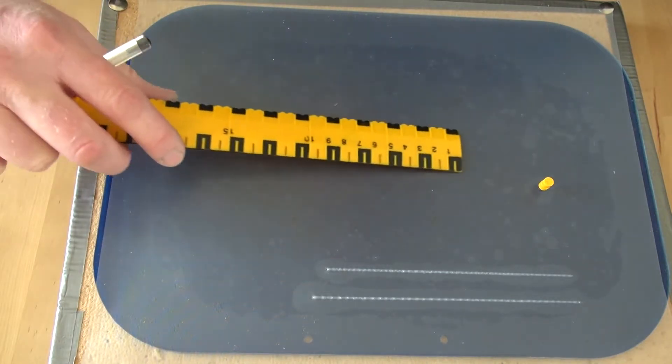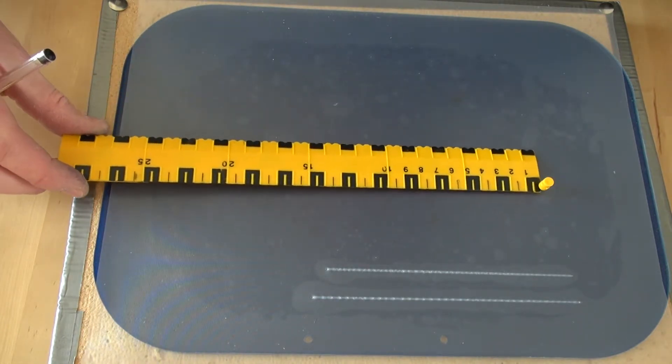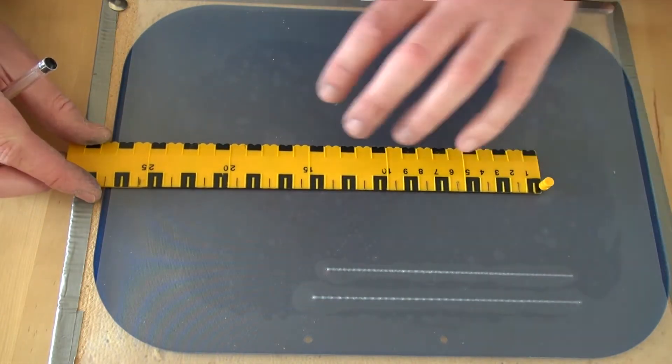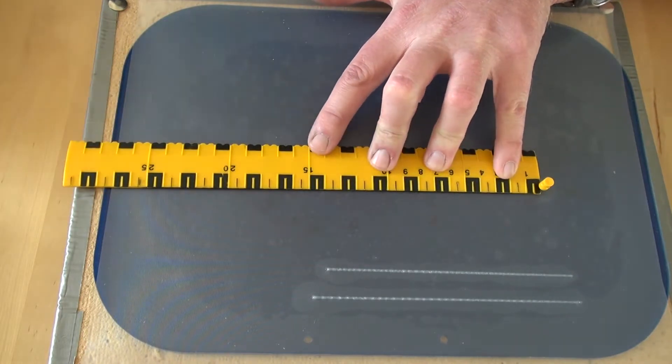Next thing to do, jam the ruler up against that pin and hold it in place with your left hand, if you're right-handed that is.